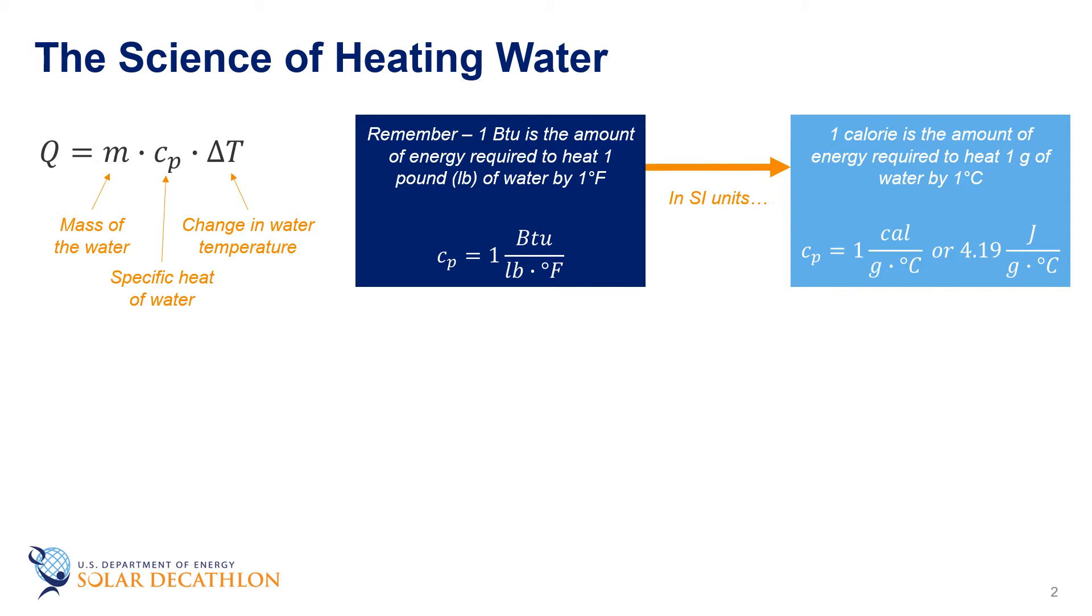We typically measure water as volume and not mass, so density times volume is mass and we can rewrite the equation as Q = ρ · V · cp · ΔT. If the density, specific heat, and temperature difference are constant, we can also write this as a rate or Q̇ = V̇ · ρ · cp · ΔT. The density of water is 8.32 pounds per gallon.